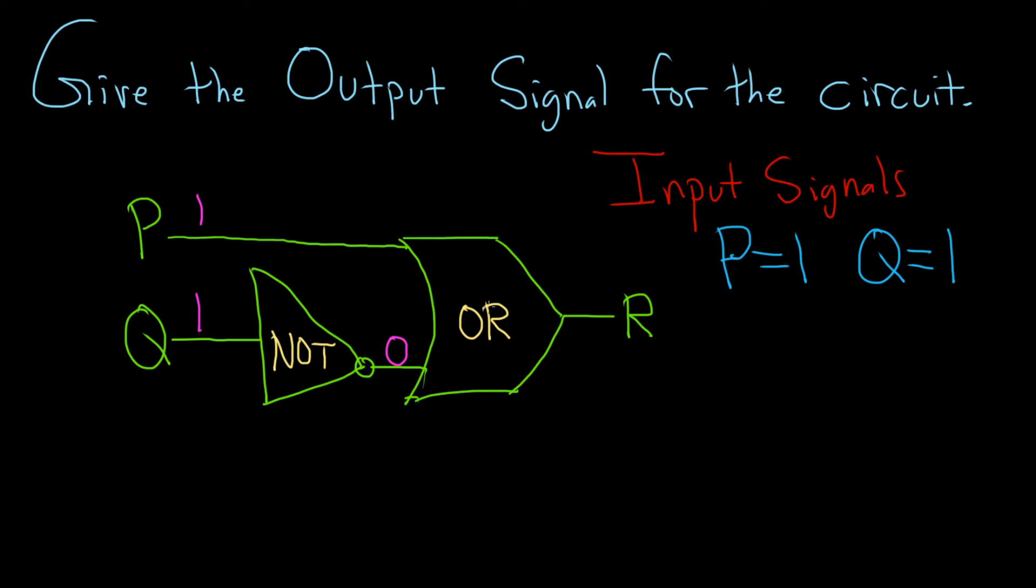And so now you have 1 and 0 entering the OR gate. I try to think of it in terms of mathematics. You have true and false. An OR statement is true if at least one of them is true. So in this case 1 is true so the result is true. Your output signal is a 1.